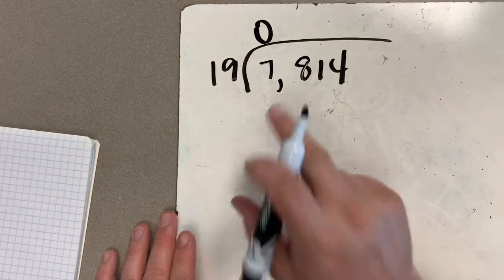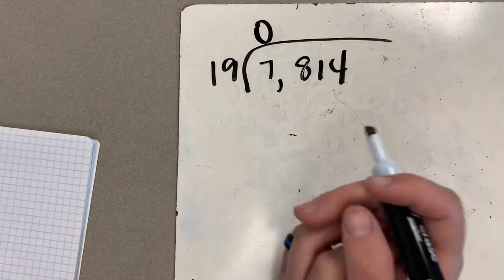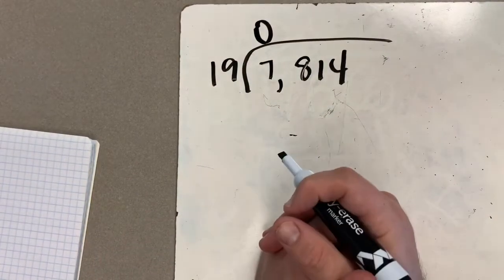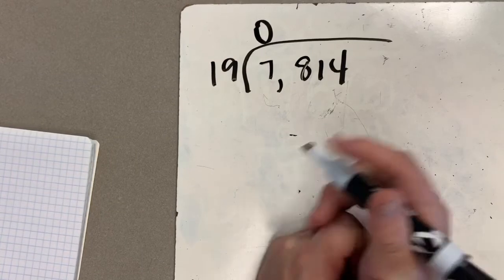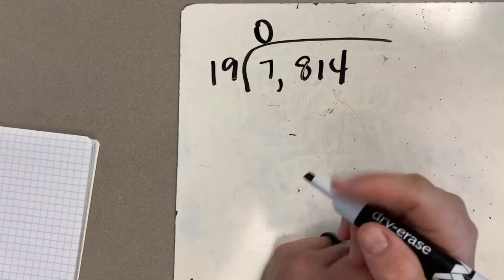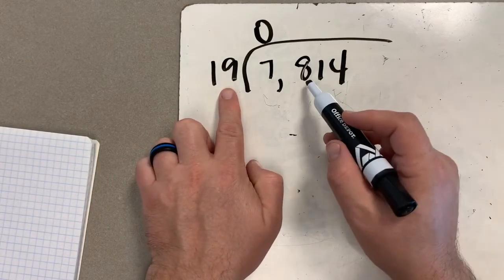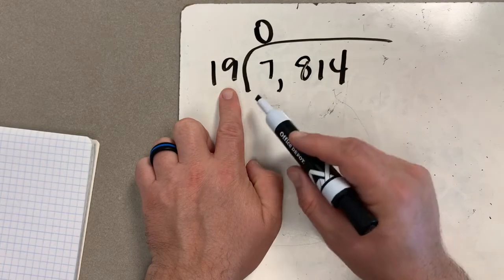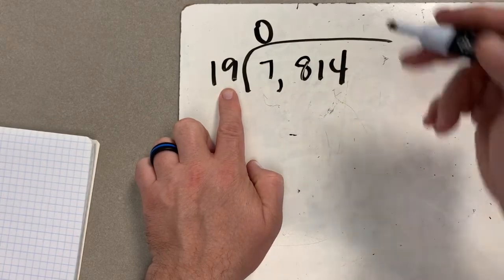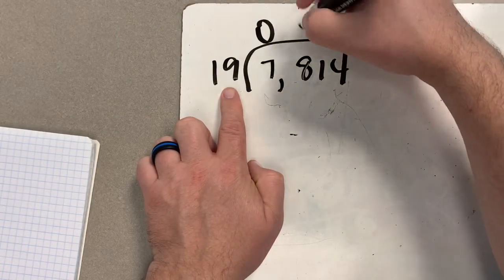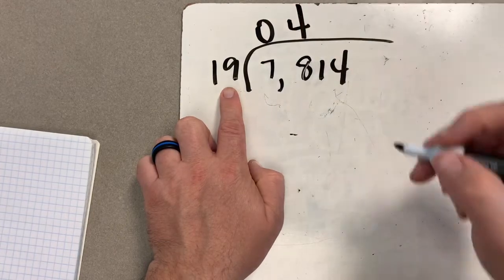I can take groups of 19 out of 78. Now, this is a hard one because I don't know my 19s off the top of my head, but I do know my 20s. I'm going to estimate, and then I'm going to guess and check. So I know if I had 20, and this is almost 80, 20 can go into 80 four times because four times two is eight. So let's try four times and see what works out.